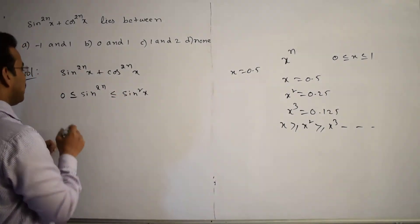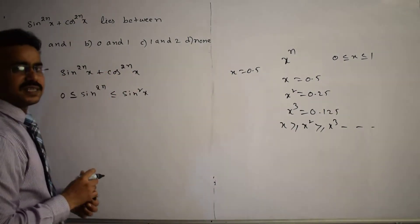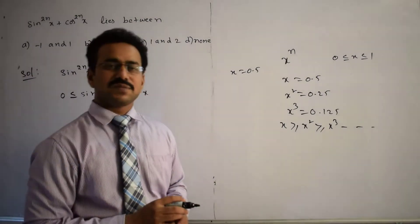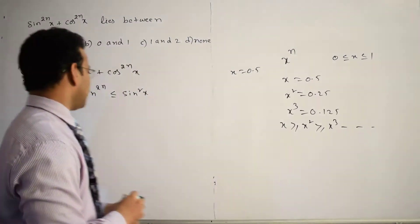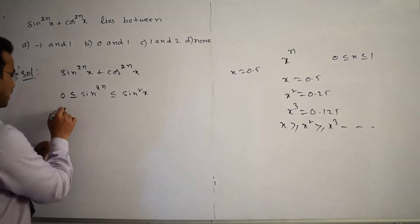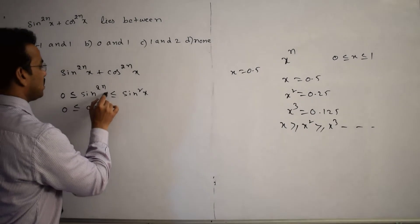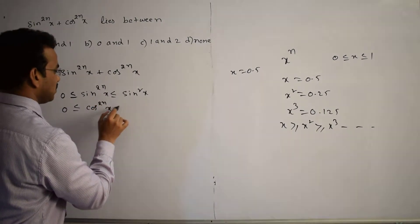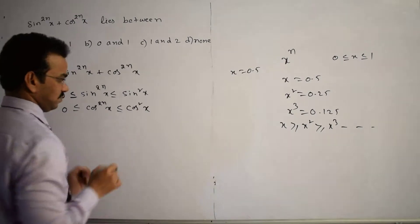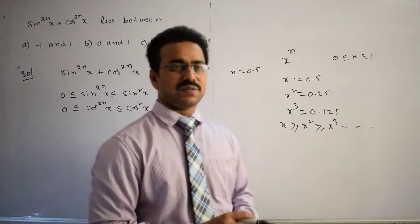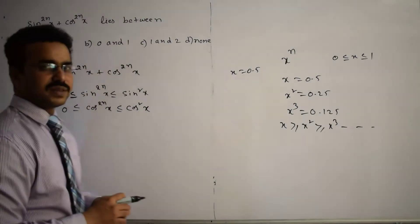Similarly for cosine: cos x also lies between −1 and 1, so cos²x always lies between 0 and 1. Therefore we can write: 0 ≤ cos²ⁿx ≤ cos²x. We now have two inequalities as required for the expression sin²ⁿx + cos²ⁿx.